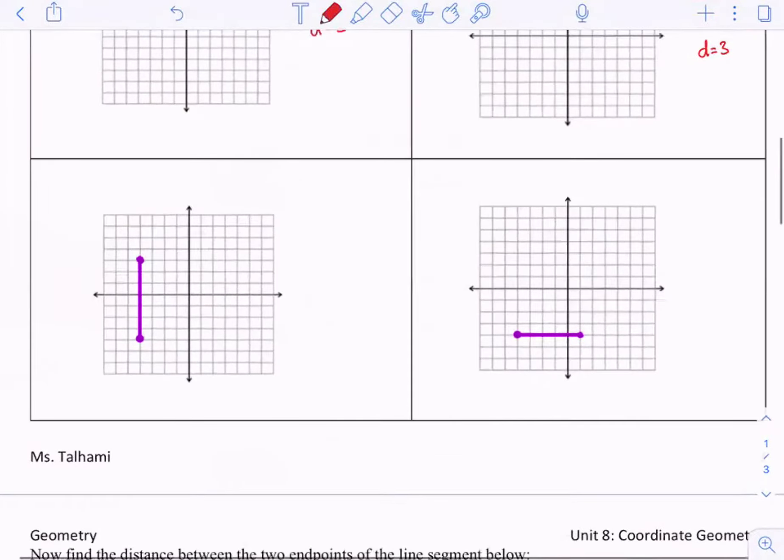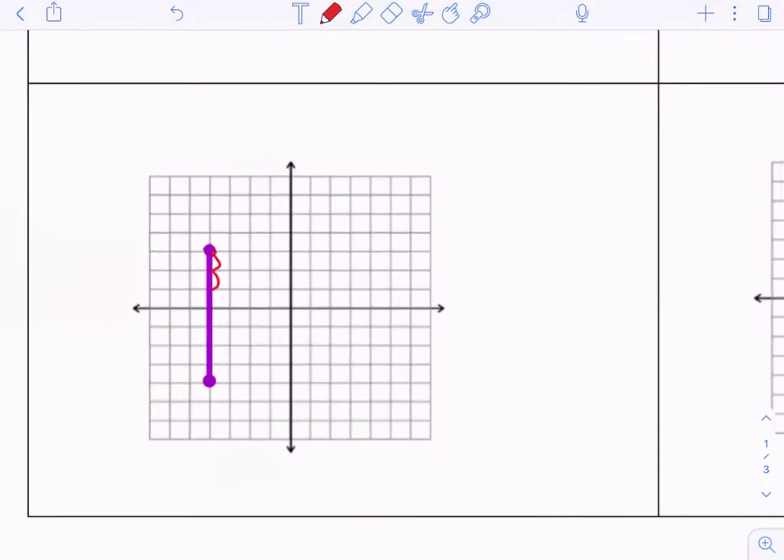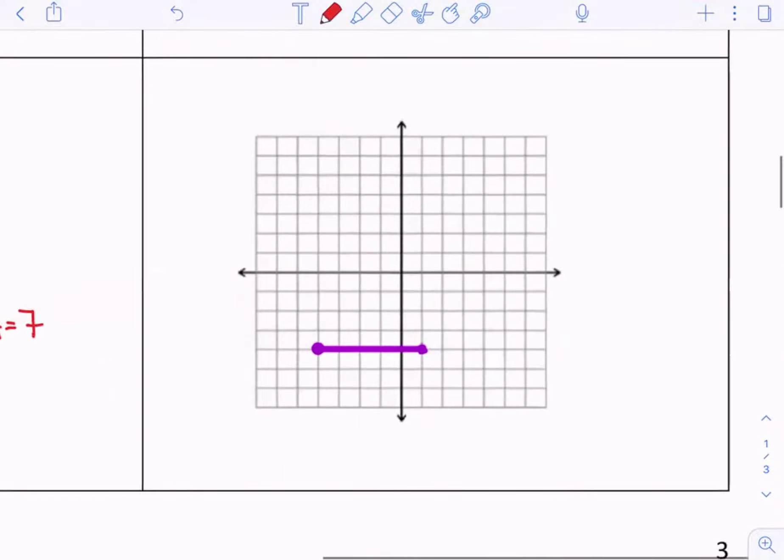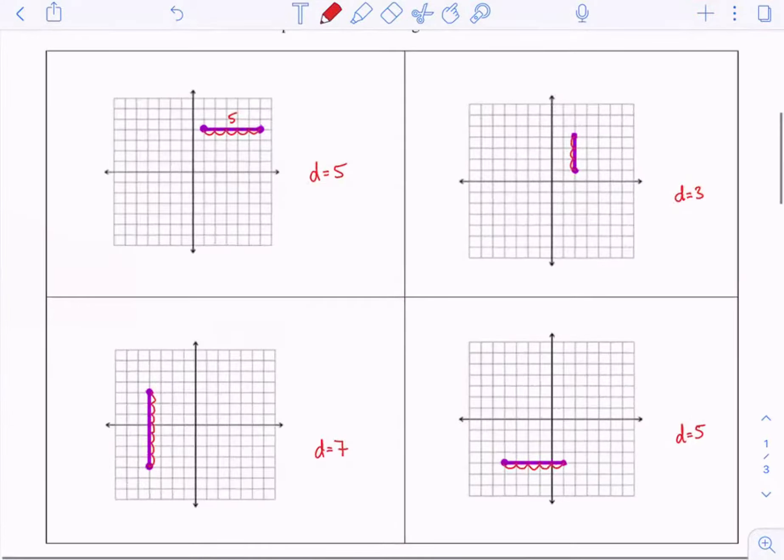Same thing with the next two. One, two, three, four, five, six, seven. So the distance is seven. Then over here, one, two, three, four, five. So the distance here is five. So as you could see, if I have a horizontal or vertical line, finding the distance is simple. I could just count the spaces. I count how many spaces between the two points and that is my distance. Notice I use the lowercase letter d.